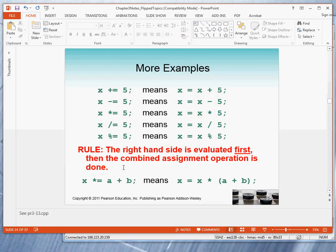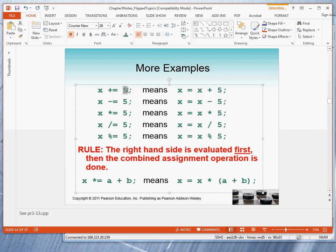So here's the rule. The right-hand side is evaluated first. In this case, this is the right-hand side. This is the right-hand side. And then the combined assignment operator is applied. That simply means we evaluate and then we apply the combined operator. In this case, adding the value of the variable on the left-hand side.